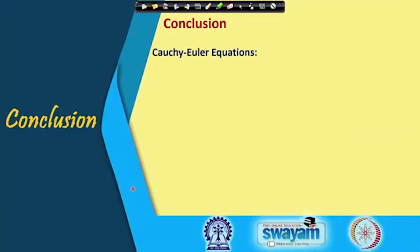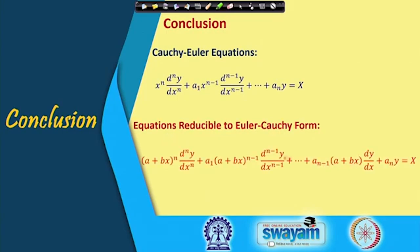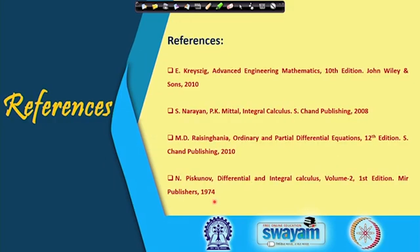In conclusion, we have discussed Cauchy-Euler equations — a special form with coefficients x^n, x^(n-1), etc. — and equations reducible to Cauchy-Euler form, specifically where x^n is replaced by (a+bx)^n. The key idea is that substituting a+bx = v reduces the equation to Cauchy-Euler form, and one more substitution yields a linear equation with constant coefficients. Thank you for your attention.